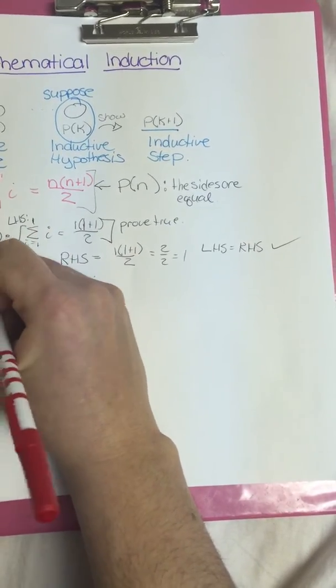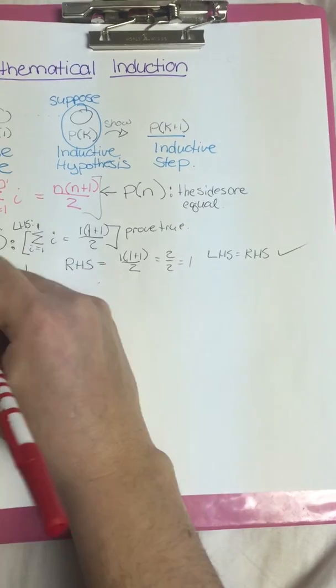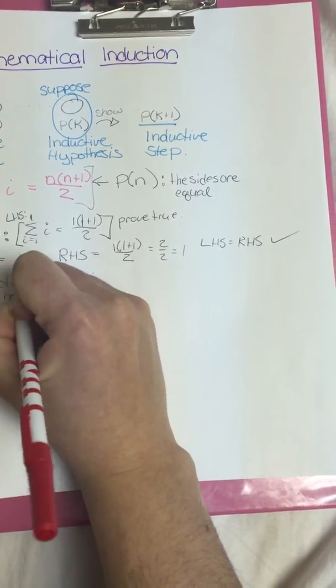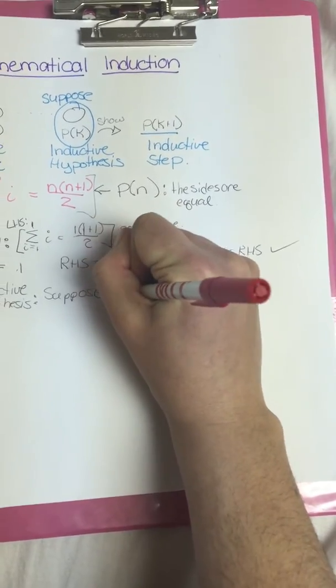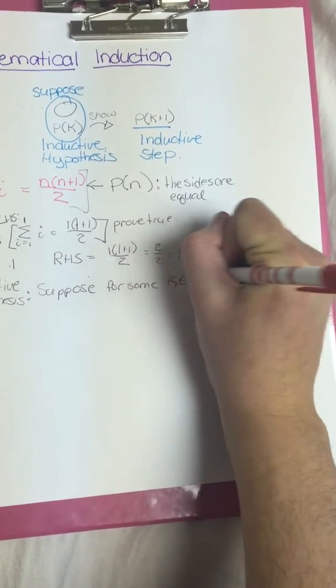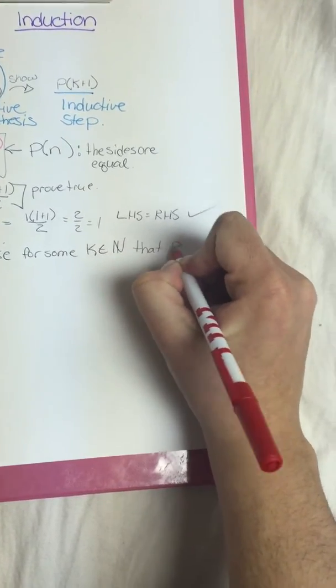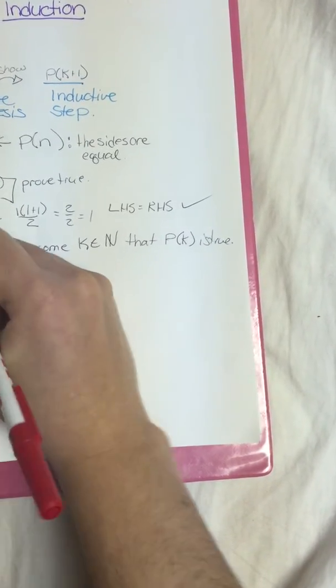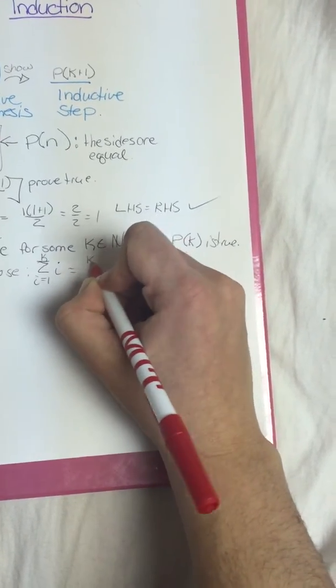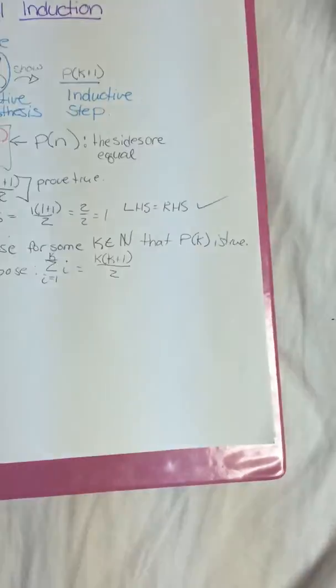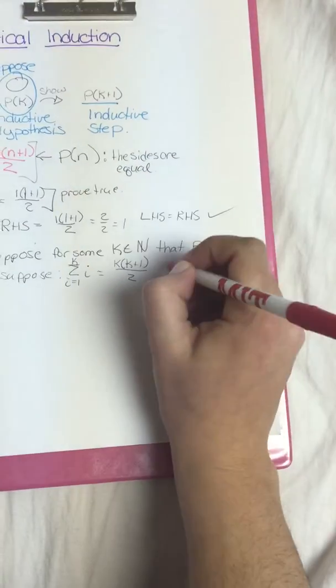So now we want to do the inductive hypothesis. We're going to suppose for some k in the natural numbers that P of k is true. That is, suppose the sum from i equals 1 all the way up to k of i is equal to k times k plus 1 all over 2. In this step we're going to suppose that is true.